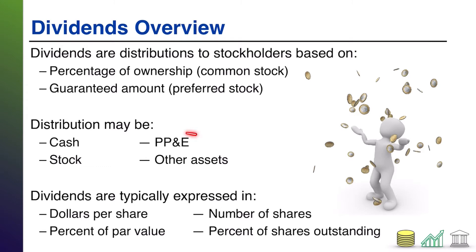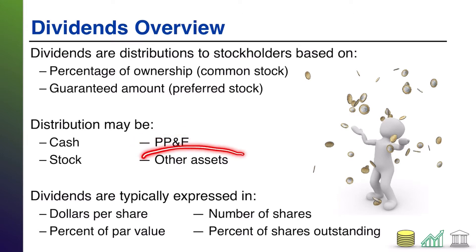In really unusual situations, you might even see companies hand out PP&E in lieu of stock or cash, or really any other asset — because a dividend is a return of value to the shareholder, and all of your assets have value. So you could see some rare situations where something other than cash or stock is given to investors, but by and large cash and stock are the most popular.